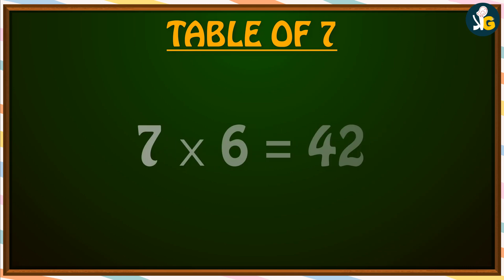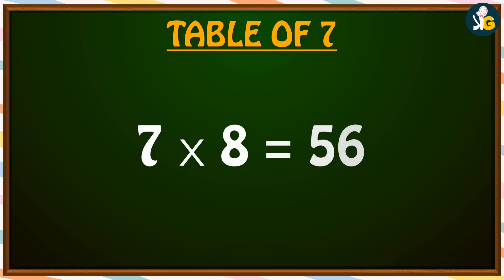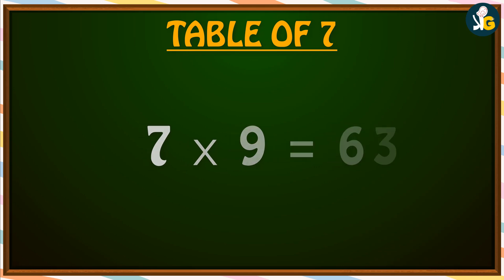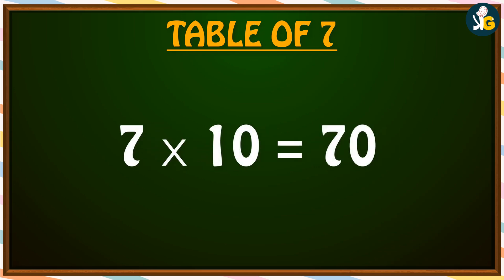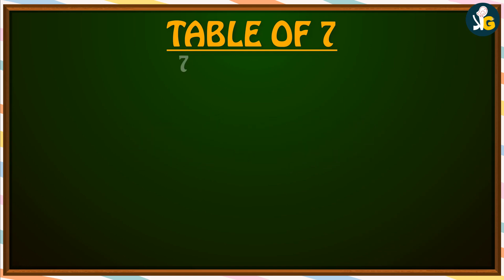7 times 6 is 42. 7 times 7 is 49. 7 times 8 is 56. 7 times 9 is 63. 7 times 10 is 70. Just revise.